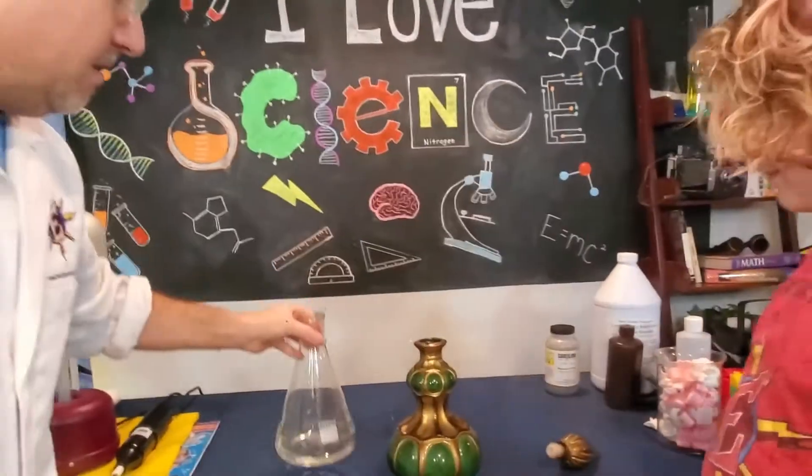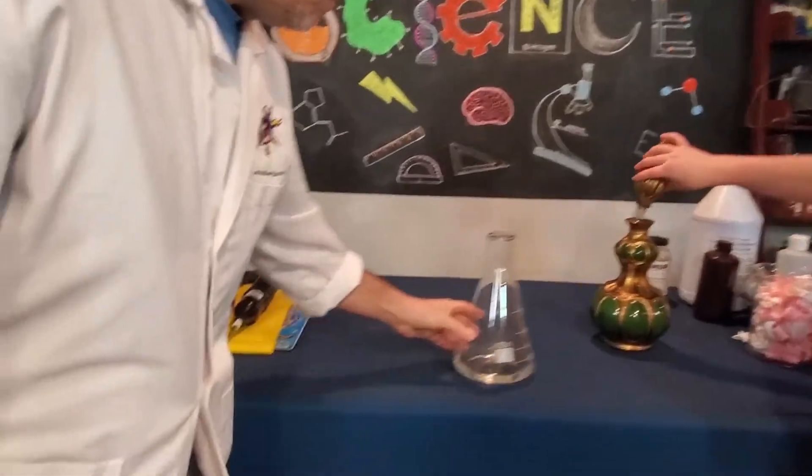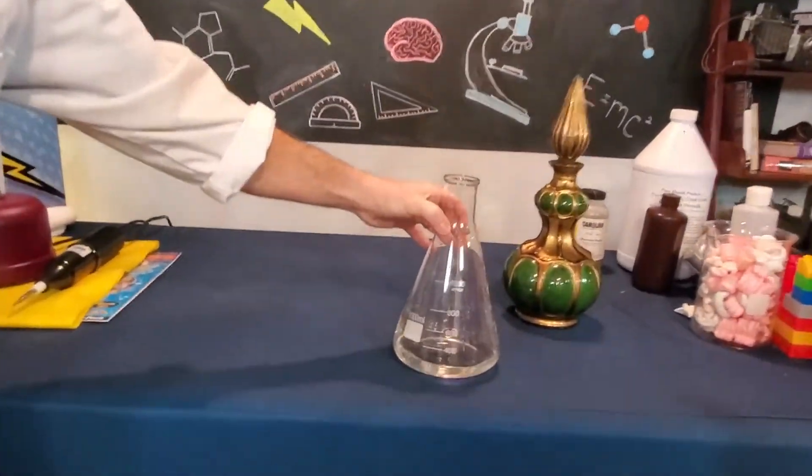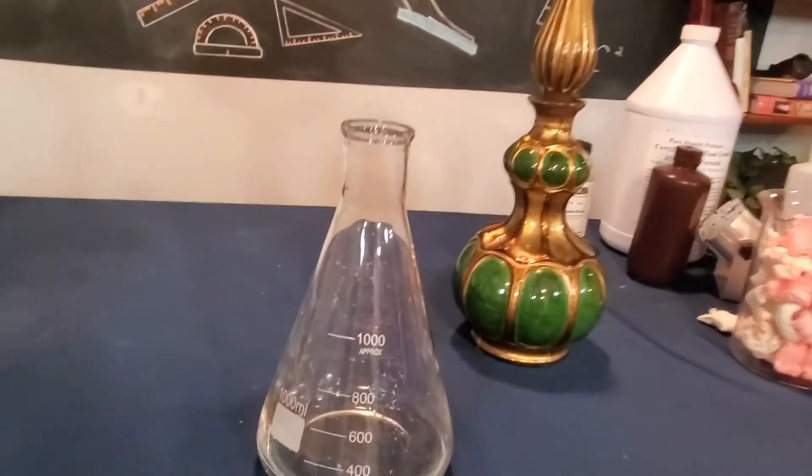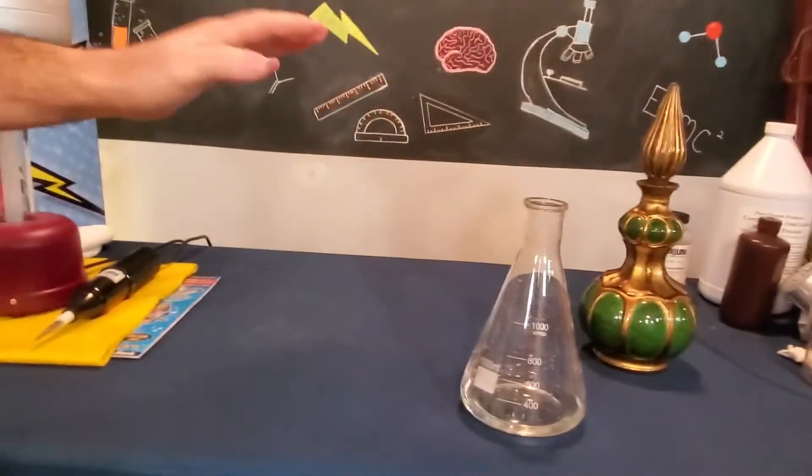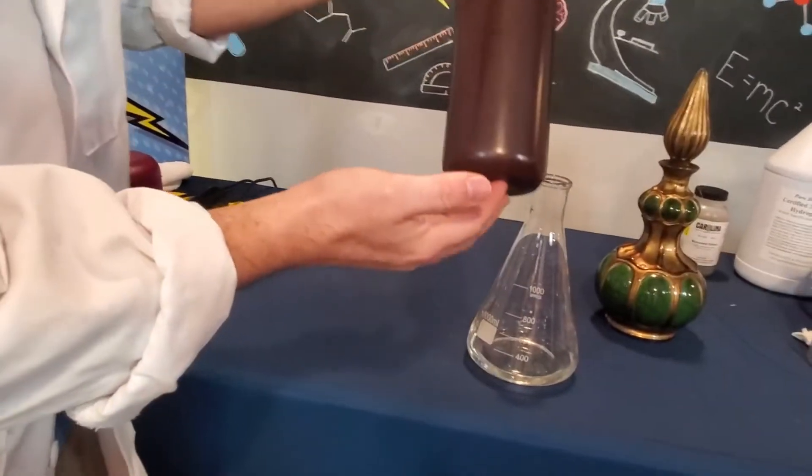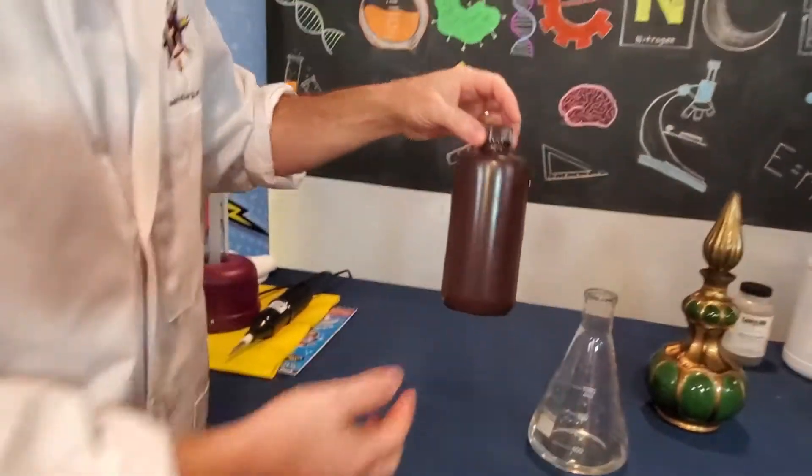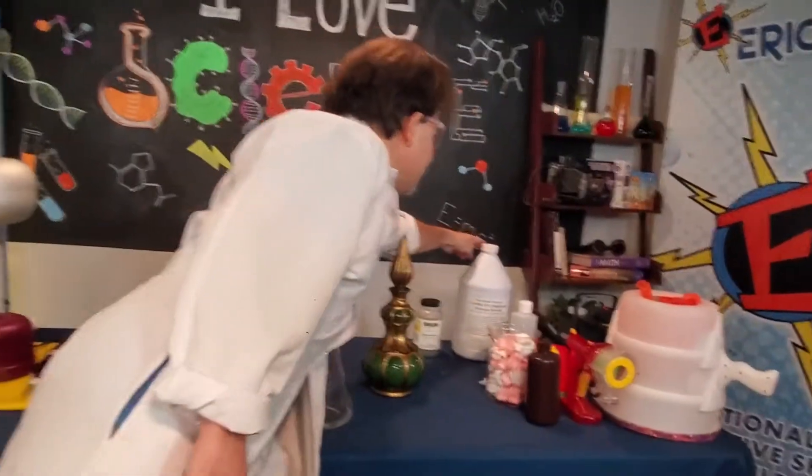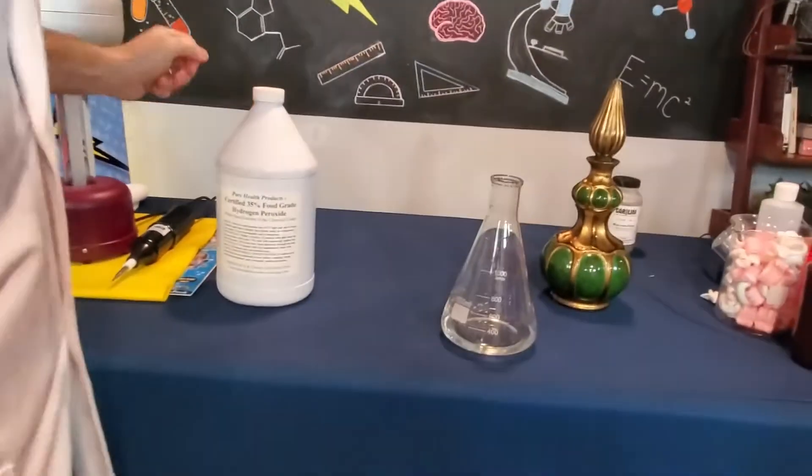Now, the Genie has gone away. So now, we're going to take a look at this Erlenmeyer flask. And inside, there's a liquid. The liquid is what was in the bottom of this Genie bottle. It's hydrogen peroxide. But it's not the hydrogen peroxide that you have in your bathroom. Hydrogen peroxide is usually about 5% strong. This hydrogen peroxide is 35% strong. It is food-grade hydrogen peroxide. That's what we put at the bottom of the container.